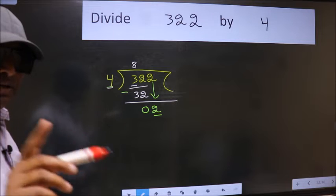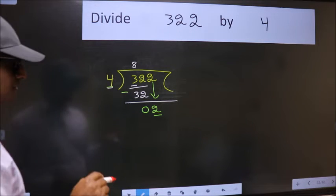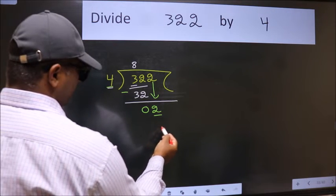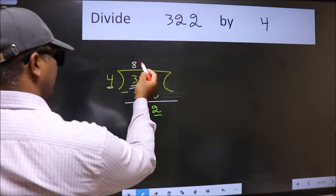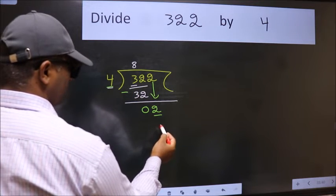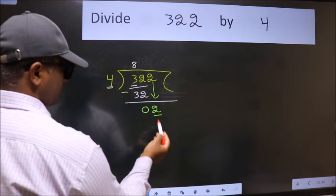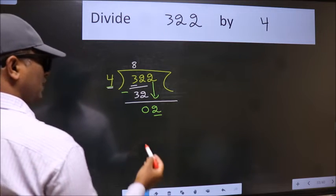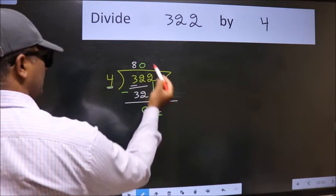Instead of that, what we should think is which number should we take here. If I take 1, we will get 4, but 4 is larger than 2. So what we do is take 0 here.